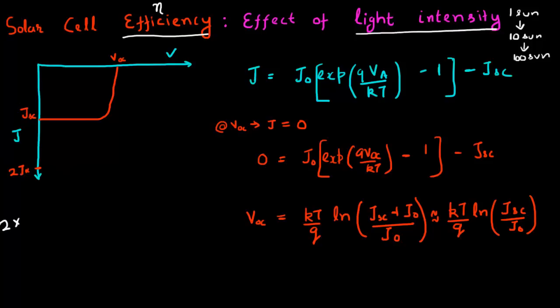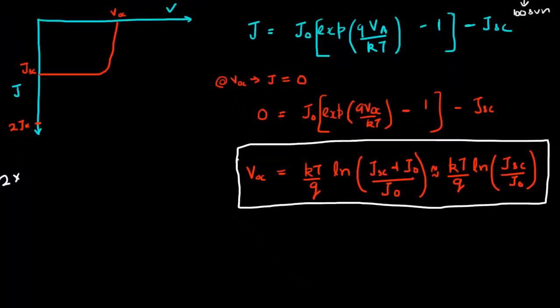But what would happen to the open circuit voltage? So that is an interesting relationship which emerges from this formula that I derived. So what I see is that if I increase my short circuit current and make it twice, what I see is that my open circuit voltage will also increase, but not linearly, but much more slowly with a logarithmic dependence on the short circuit current.